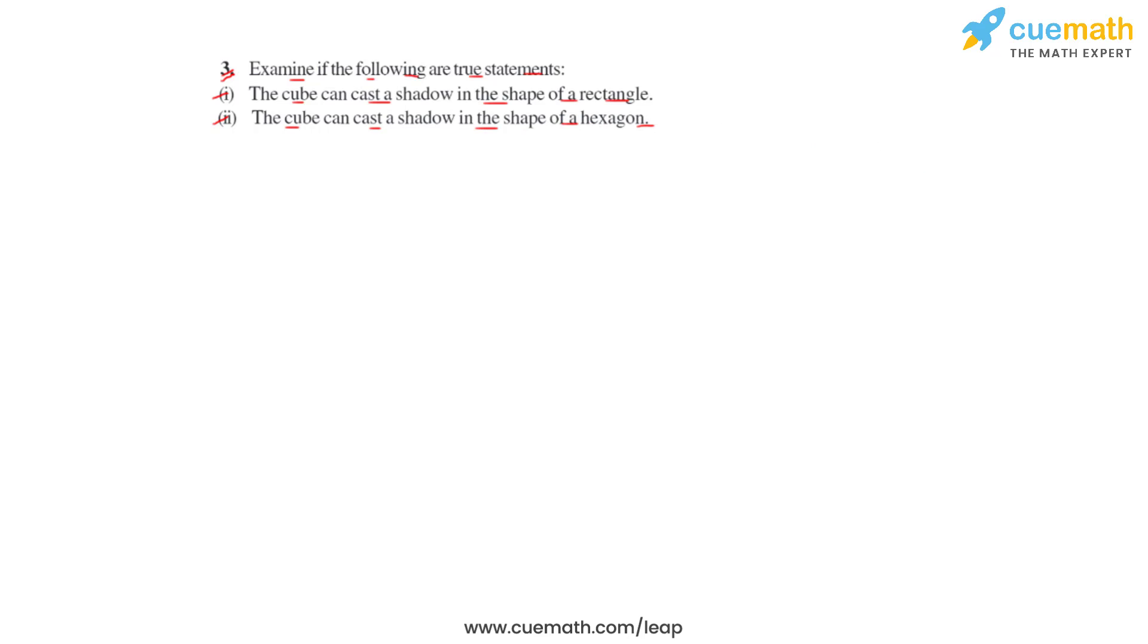So to understand this, let us consider a cube which is placed under a lamp as we can see here in this particular figure. Now since the lamp is present here, the shadow will be cast in this direction.